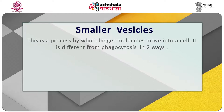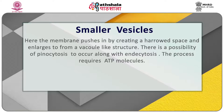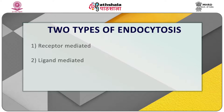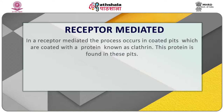It is different from phagocytosis in two ways. One, the membrane pushes in, creating a narrowed space that enlarges to form a vacuole-like structure. There is also a possibility of pinocytosis occurring along with endocytosis. The process requires ATP molecules. There are two types of endocytosis: receptor-mediated and ligand-mediated. In receptor-mediated endocytosis, the process occurs in coated pits which are coated with a protein known as clathrin.